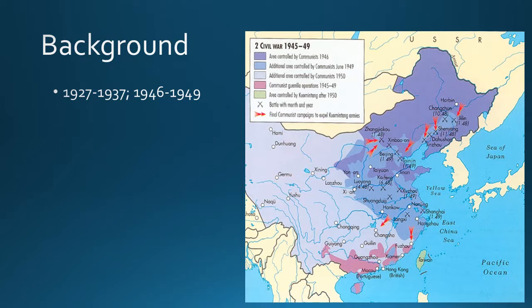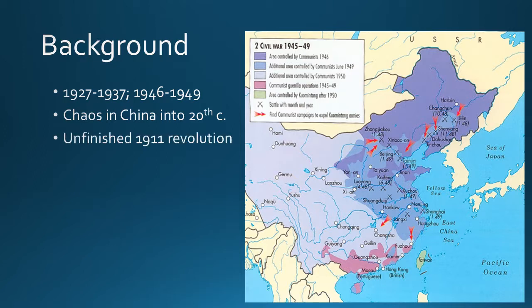Fighting starts in 1927 and goes to about 1937, and then fighting will resume from 1946 through 1949. You might wonder why fighting stops. Well, there's a big moment that affects China — the invasion by Japan — which is going to start World War II in the Pacific and in Asia. When that happens, the two sides fighting each other, the communists and the nationalists, are going to decide it's time to come together, fight off the Japanese, and then deal with their internal problems.